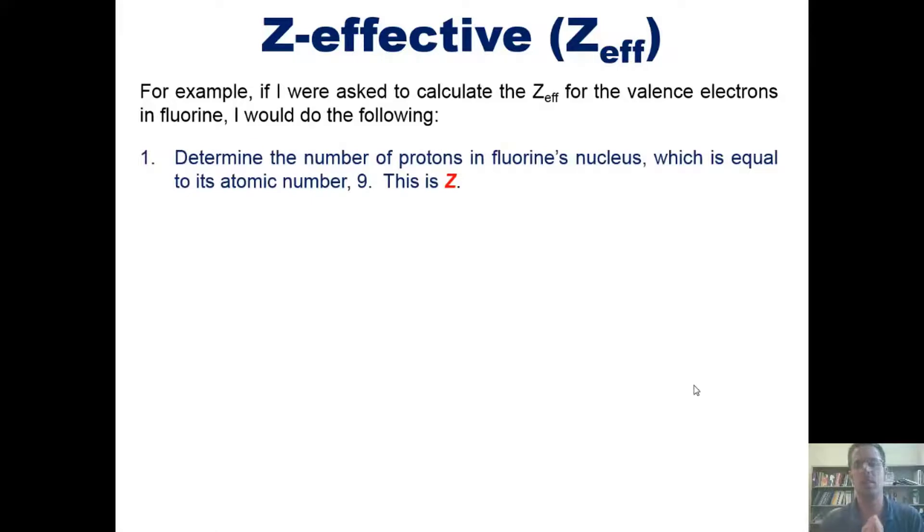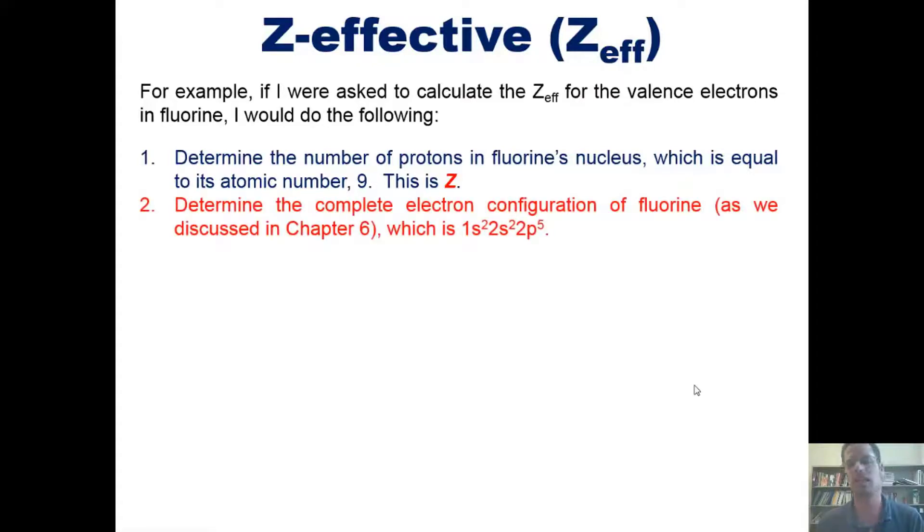One, I would determine the number of protons in fluorine's nucleus, which is always equal to its atomic number, in this case, nine. That number happens to be Z from the equation I just showed you. Two, determine the complete electron configuration of fluorine as we've discussed in Chapter 6. I'll post a link to that lecture right here. For fluorine, that electron configuration is 1s2, 2s2, 2p5.